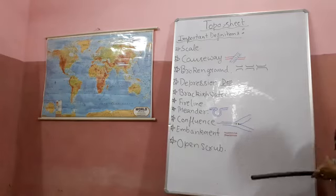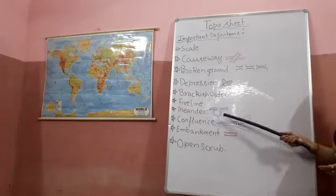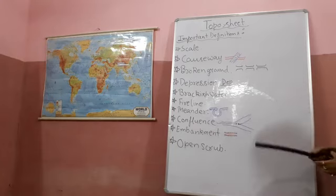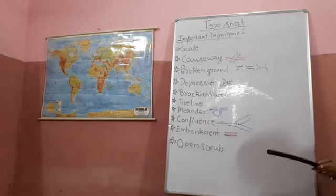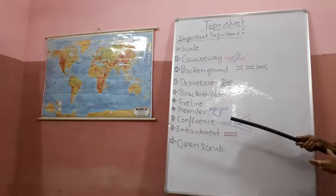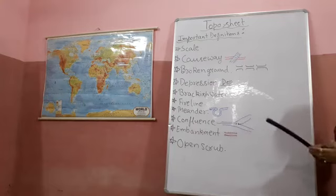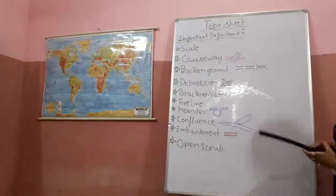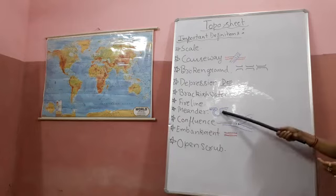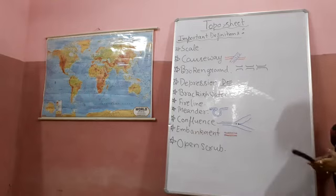Now next is the meander. Meander means what? It is the S-shaped bend of a river. When the river flows in its path, if a highland comes in the way, the river has to change its path. In that area, it forms a meander.